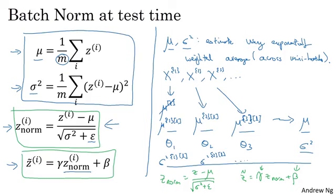what people usually do is implement an exponentially weighted average where you just keep track of the mu and sigma squared values you're seeing during training and use an exponentially weighted average, also sometimes called a running average, to just get a rough estimate of mu and sigma squared.